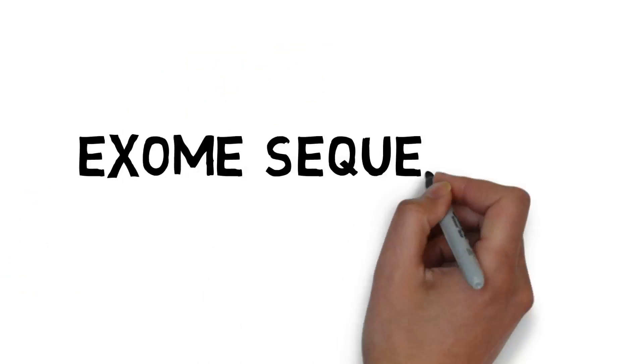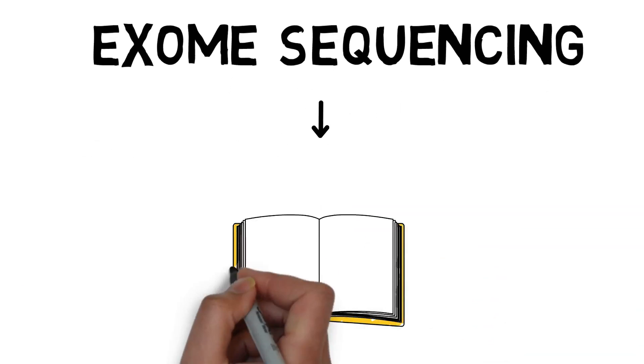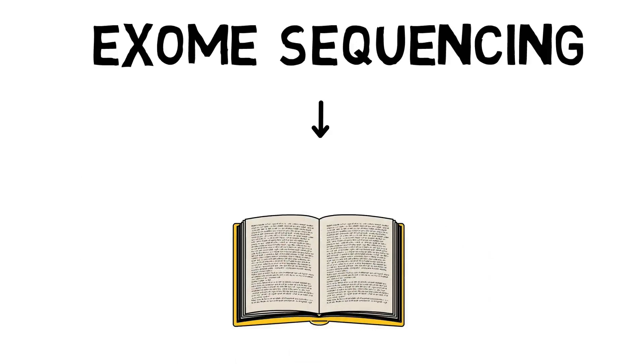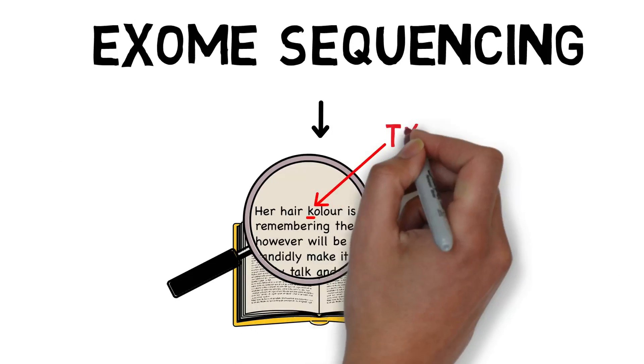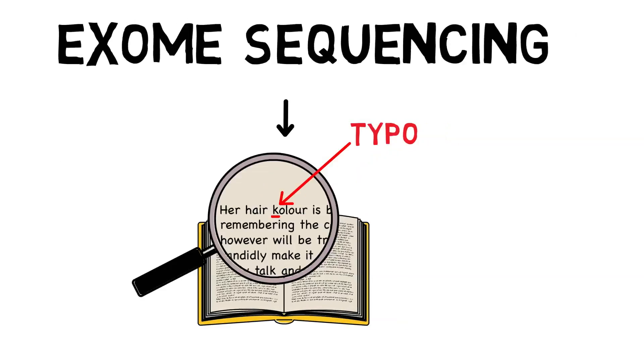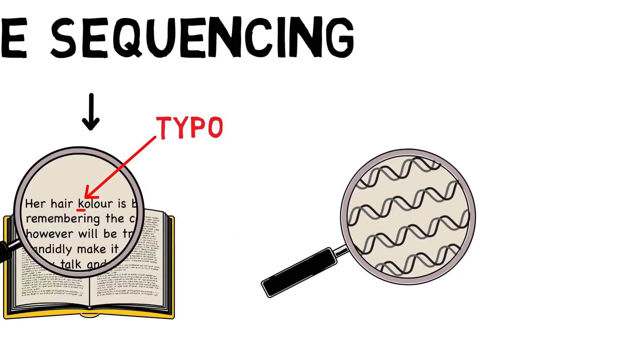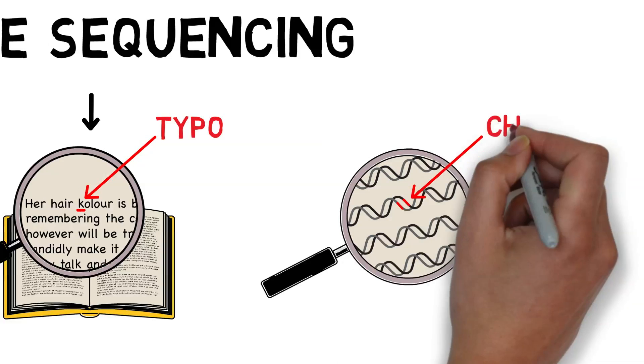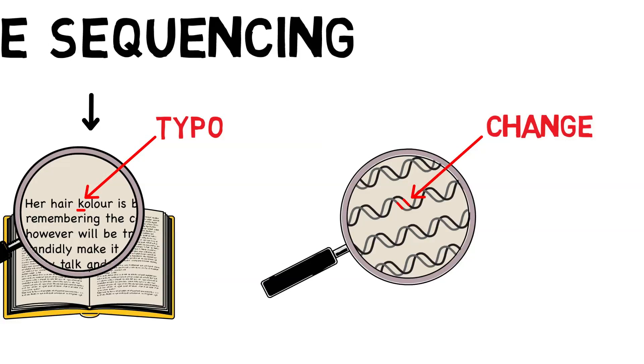Exome sequencing is like examining those 10,000 pages, one letter at a time, to see if there are changes like typos. The exome is important to look at because most genetic diseases are caused by changes or alterations in the exome.